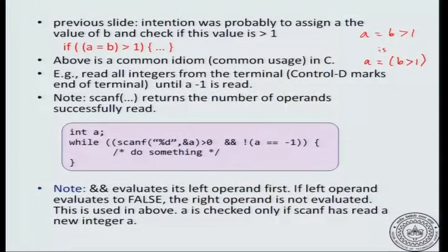Whatever is within parentheses will be evaluated first. So if you write (a = b) > 1, then a = b will be evaluated first. Since b is 2, a will get the value 2. The assignment a = b returns the value 2, and 2 is greater than 1, so it will be executed.